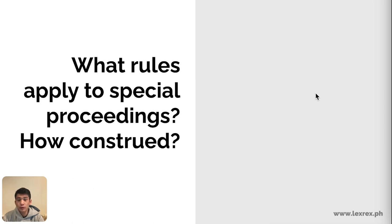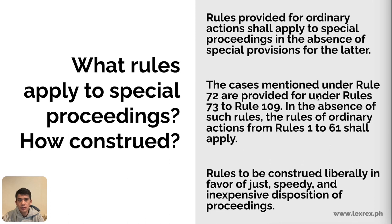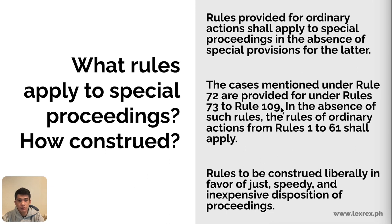What rules apply to special proceedings? Special proceedings are enumerated in Rule 72, but these enumerations are not exclusive. Generally, the rules that will apply are those specifically provided under Rules 73 to 109. In the absence of specific rules, the rules of ordinary actions found in Rules 1 to 61 will supplement and govern special proceedings.